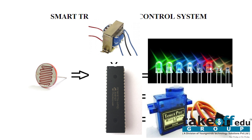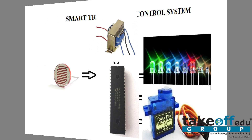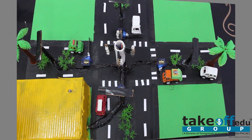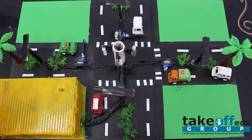We have four directions. In those four directions, we need to control the traffic lights. If one direction is green, the other direction should be red.